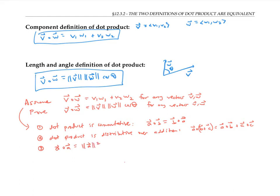These three properties follow immediately from the component definition of dot product, just by writing out all the vectors in terms of their components. Now we'll get started on the main part of the proof.